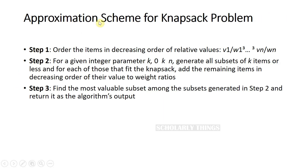The next one is the approximation scheme for the knapsack problem. Step 1: order the items in decreasing order of their relative values. Step 2: generate subsets for each of the items that fit the knapsack, then add the remaining items in decreasing order of their value to weight ratio.